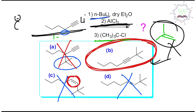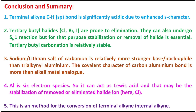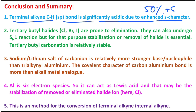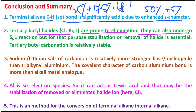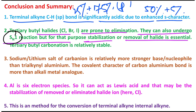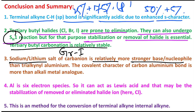In conclusion, what you have learned today: terminal alkyne sp carbon–hydrogen bonds are significantly acidic due to enhanced s-character — 50% s and 50% p in sp hybridization, versus 25% s and 75% p in sp³. Remember that tert-butyl halides are prone to elimination, but they can also undergo SN1 reactions. For the SN1 pathway, stabilization and removal of the halide is essential, which is accomplished by aluminium here. Stabilization of the tert-butyl carbocation is also essential, and the tert-butyl carbocation is relatively stable.